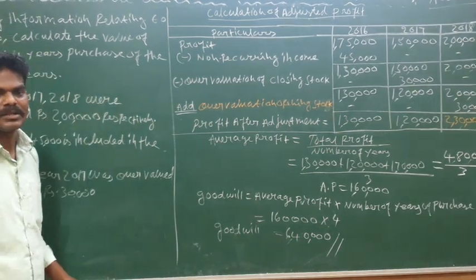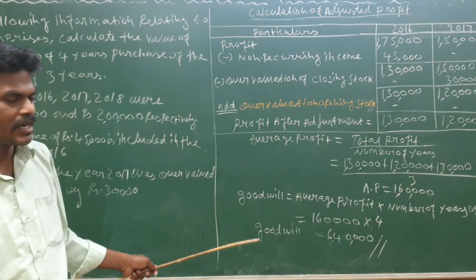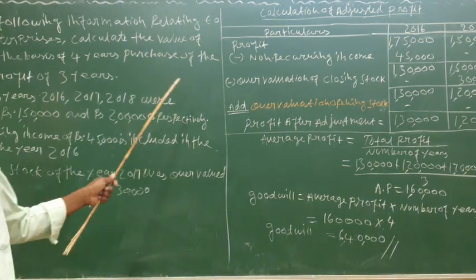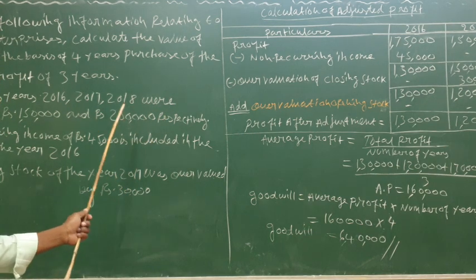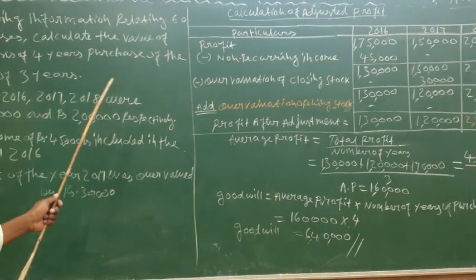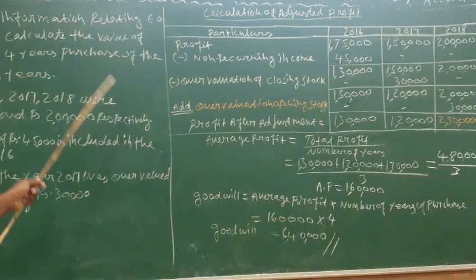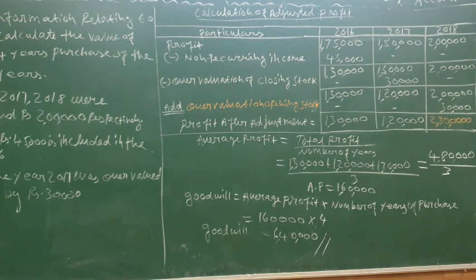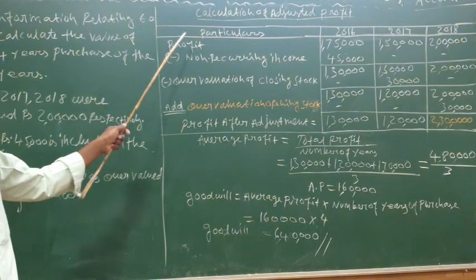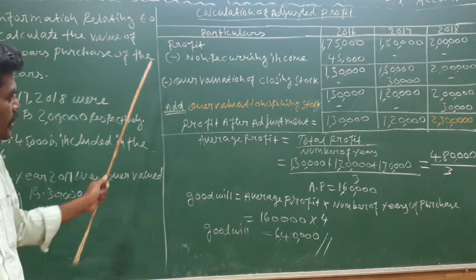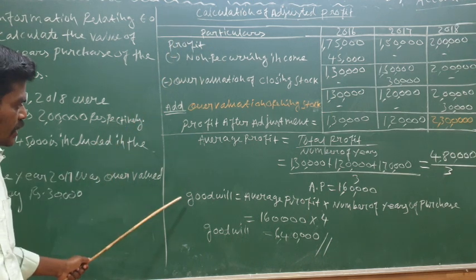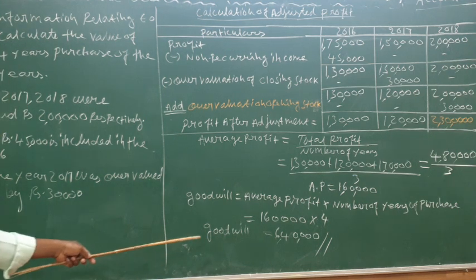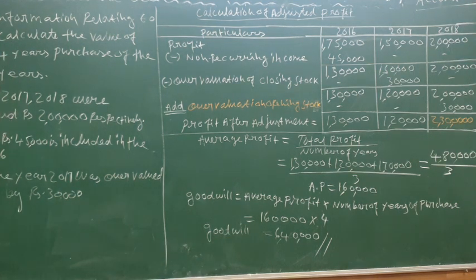Therefore, the goodwill value is Rs. 6,40,000. We have calculated the adjusted profit and used the average profit method with 4-year purchase to arrive at the goodwill figure.